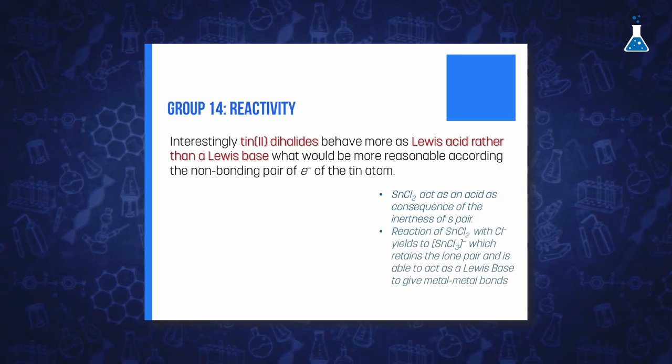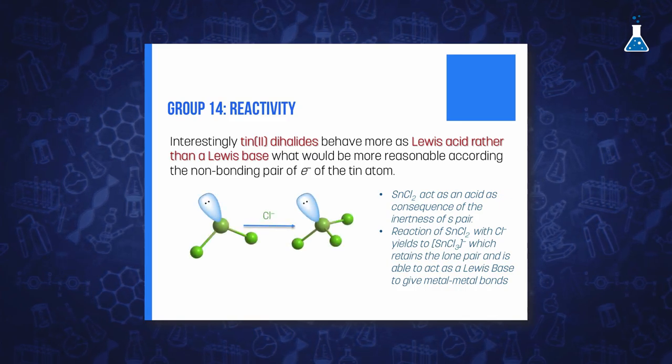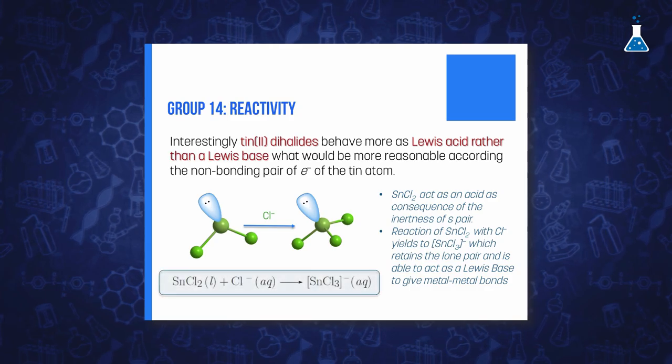Thus, for example, tin dichloride accepts chloride ions to give a trigonal pyramidal complex, namely, trichlorostannate 1 minus.